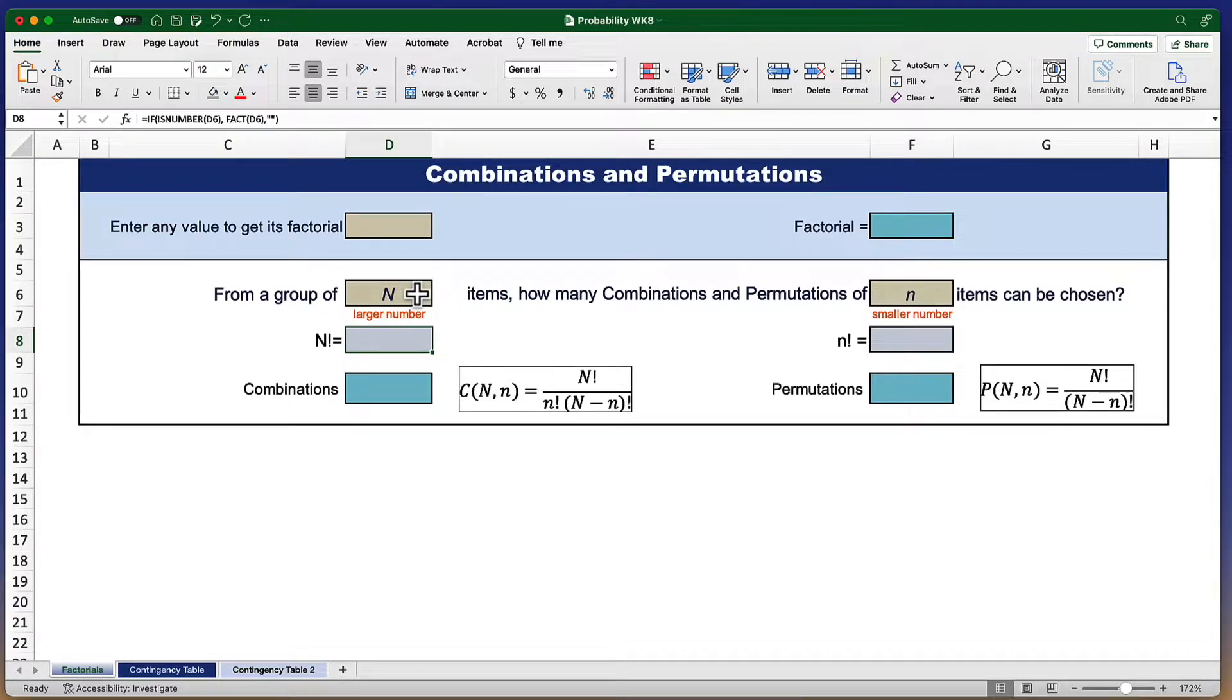So, for instance, I gave you the example if we have six items and we want to get combinations or permutations of two items. The factorial for six is 720. The factorial for two is 2.